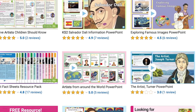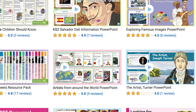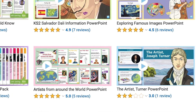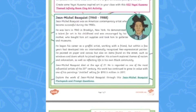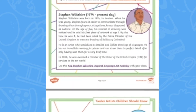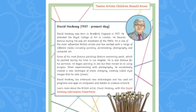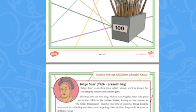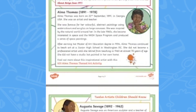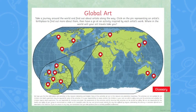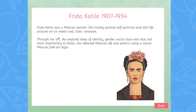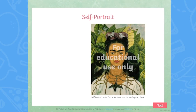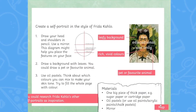If you and your children enjoyed this resource, then Twinkl has so many more resources and artists that you could use. For example, this 12 Artists Children Should Know worksheet series is a great starting place to inspire creativity in your children. Or this Artists from Around the World PowerPoint allows children to choose a place that interests them on a world map and then learn about a famous artist from that place.